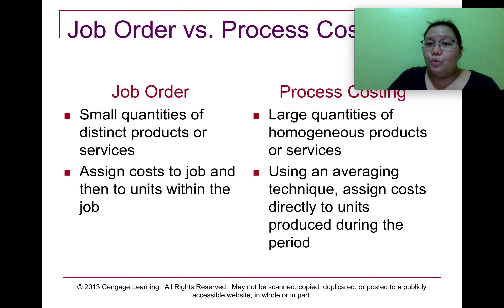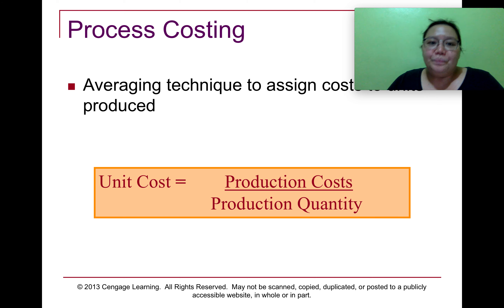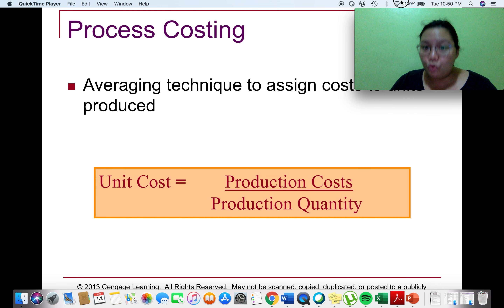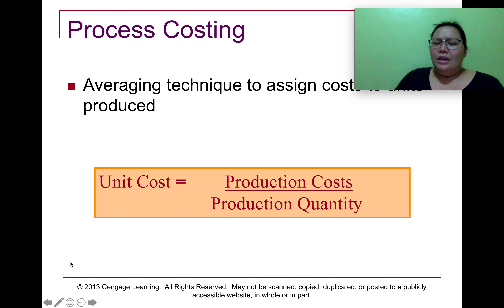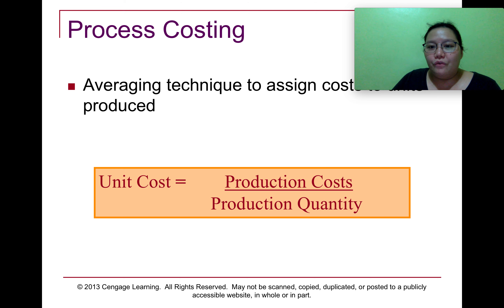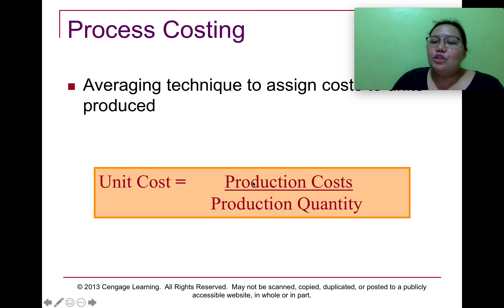In process costing, we use an averaging technique and assign cost directly to units produced during the period. We compute for the unit cost first. In job order costing, the first thing we determine is the total cost of the job. But in process costing, we determine the unit cost for each product cost — unit cost for materials, unit cost for direct labor, and unit cost for overhead. The unit cost is computed as production cost divided by the production quantity.